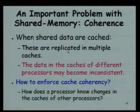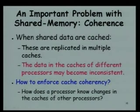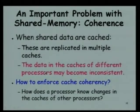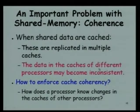Because different processors have their own private L1 and L2 caches, the same data might be replicated in multiple caches if they are used by different processors. The processors might update this data, and as a result the data in the different caches might become inconsistent. You will get a wrong result if the data becomes inconsistent in the different caches.